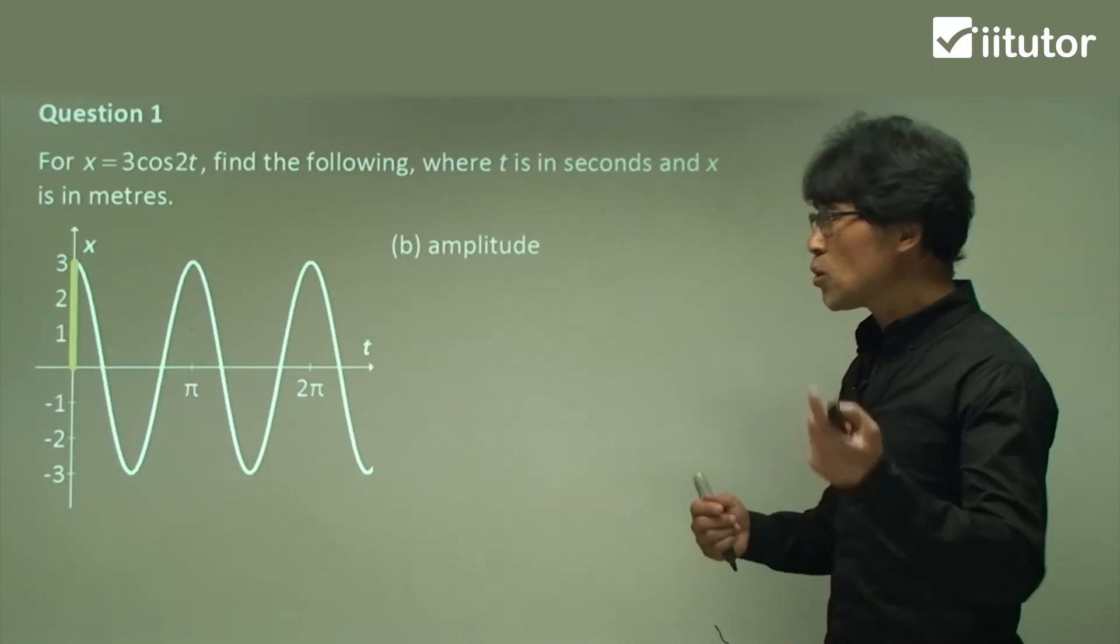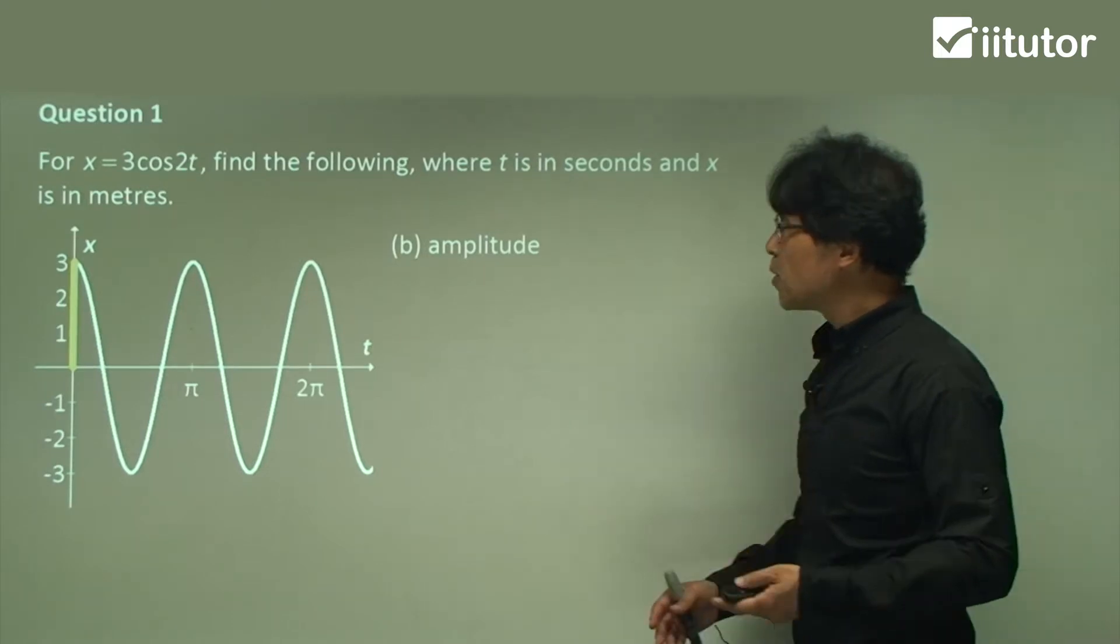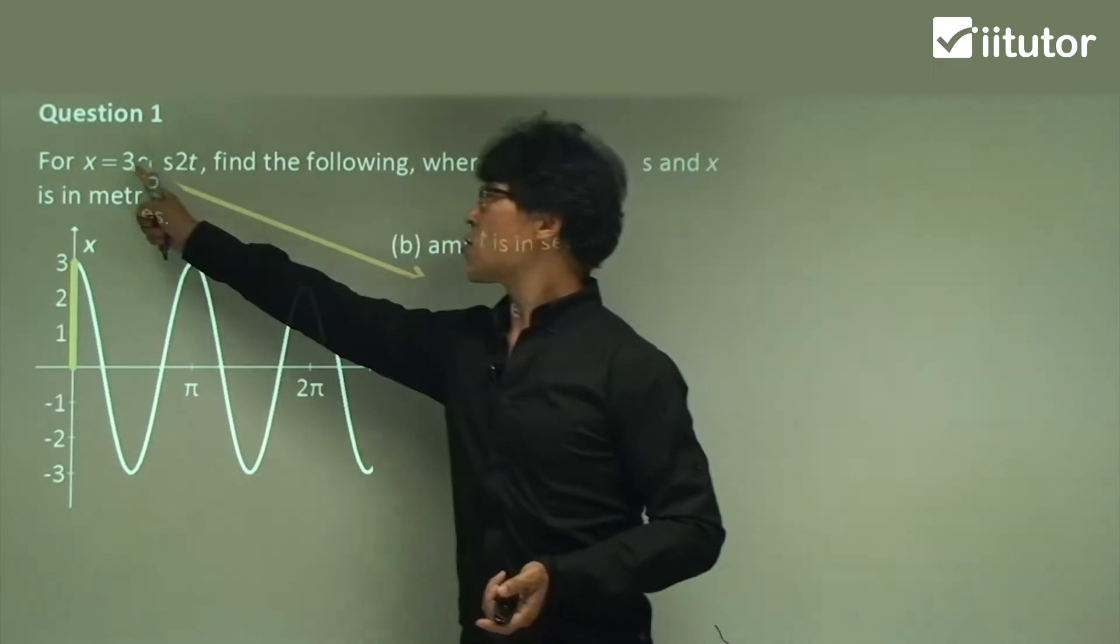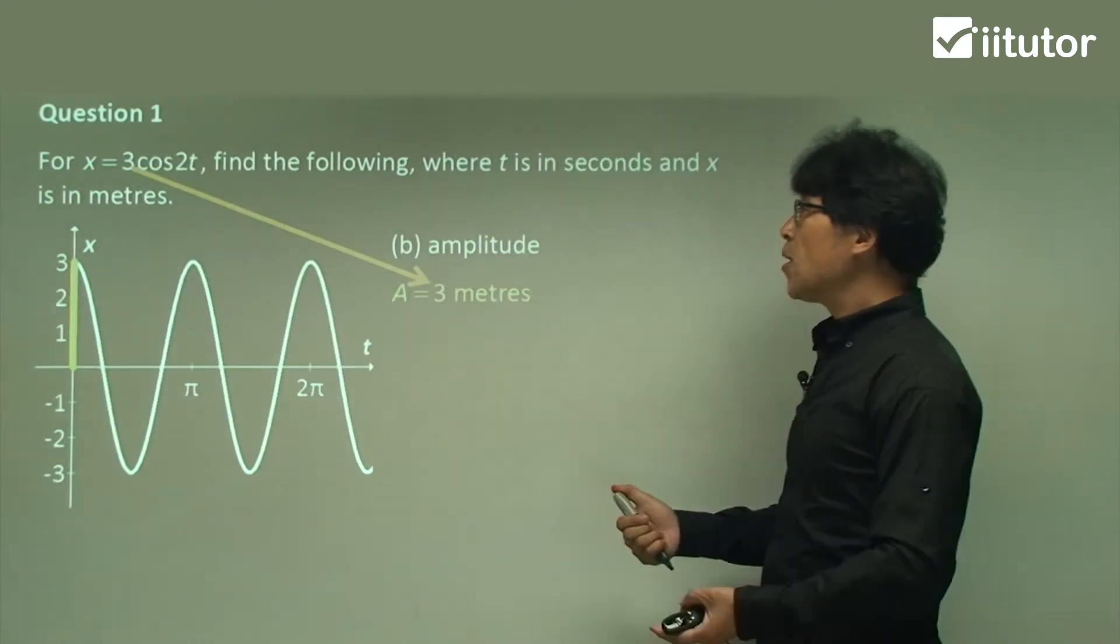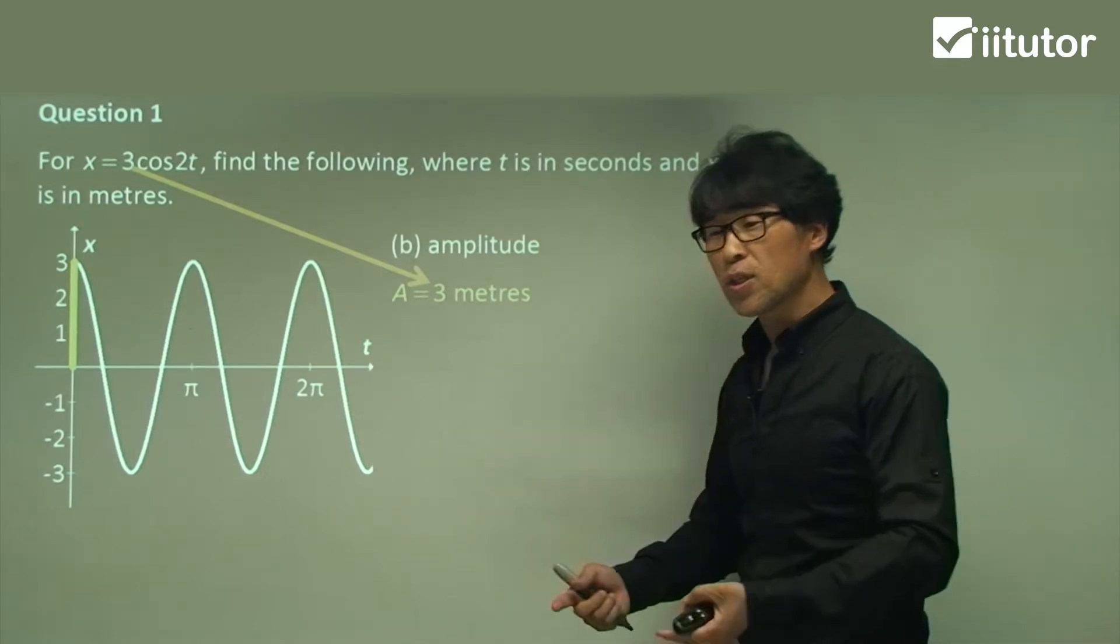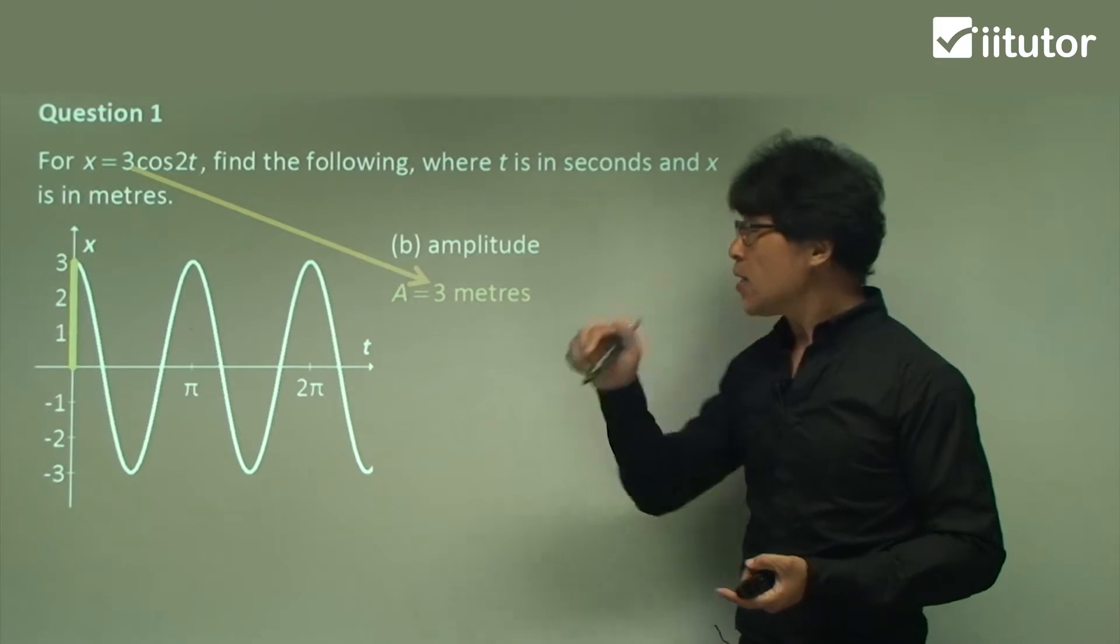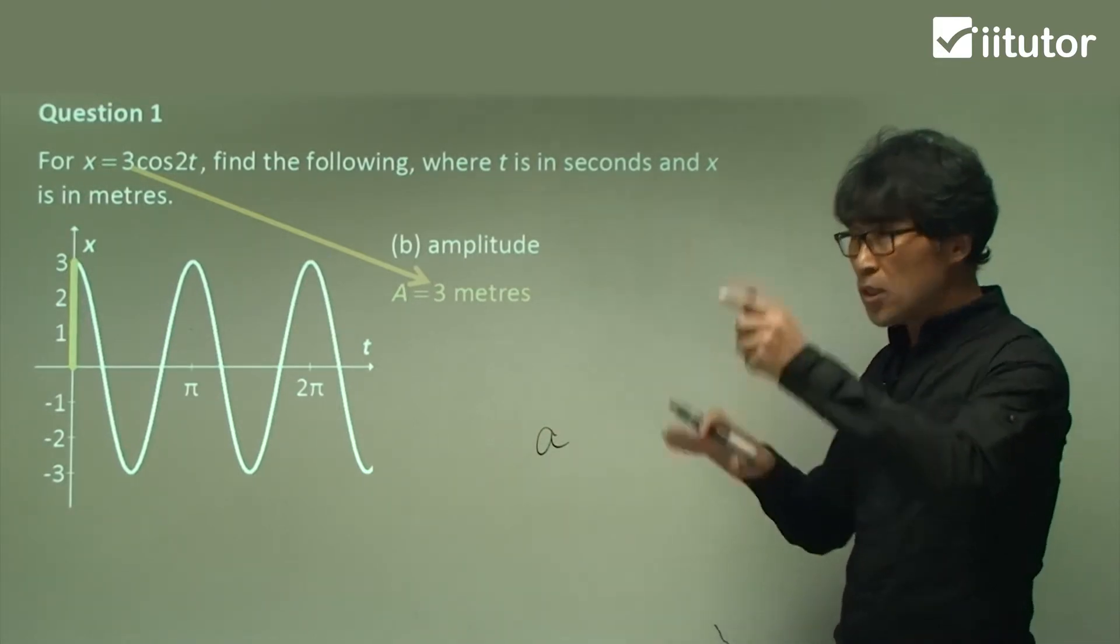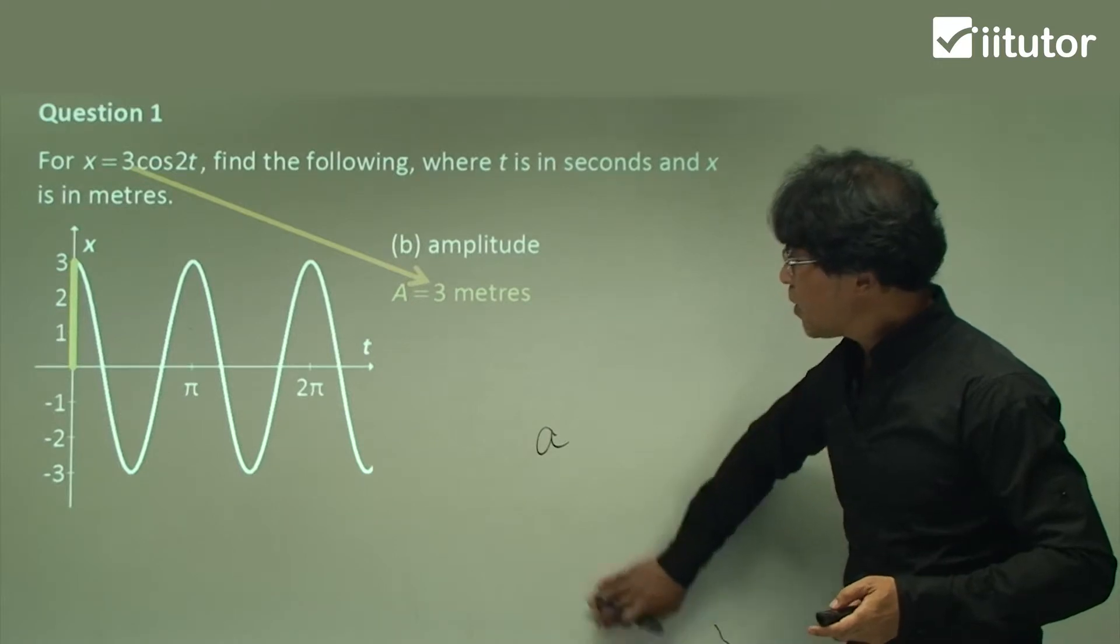In terms of notation, capital A represents amplitude, while little a represents acceleration. So you must be able to distinguish which one is which. Not always, but most of the cases. Next one is period. Remember period from here to there. How long does it take?